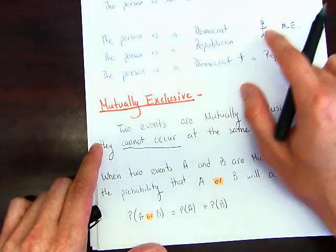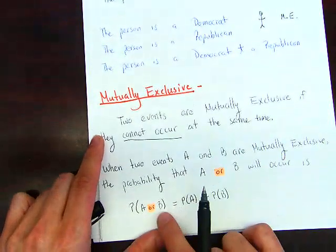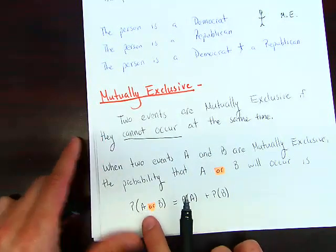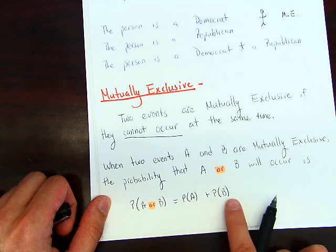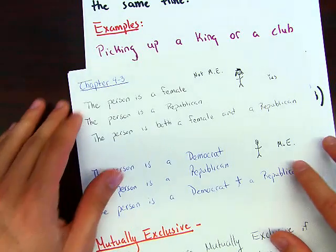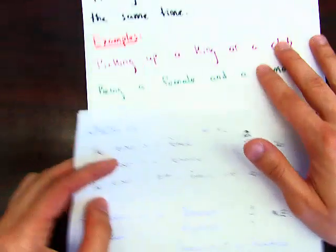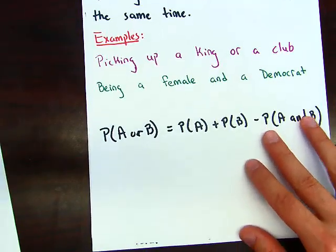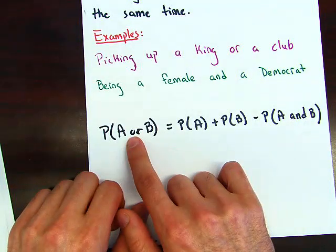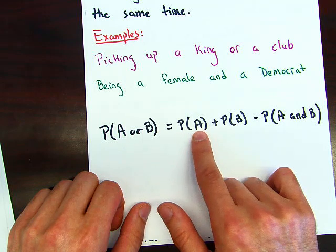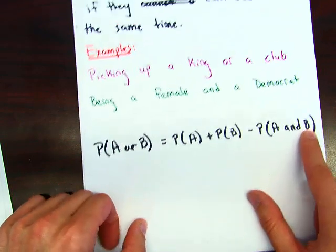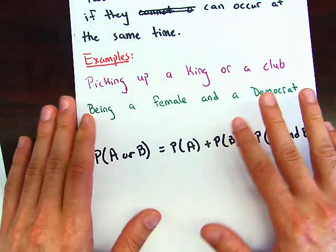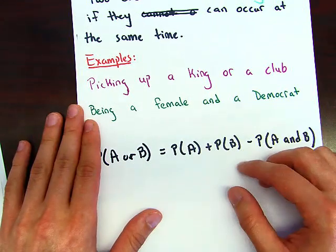Here are the formulas. If an event is mutually exclusive, the probability of A or B equals the probability of A plus the probability of B. For not mutually exclusive, the formula is: P(A or B) = P(A) + P(B) − P(A and B). Let's do some examples together.